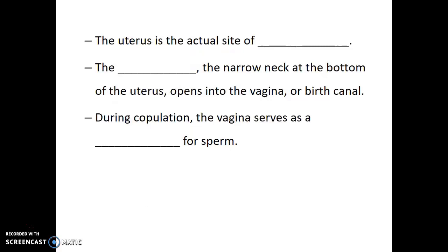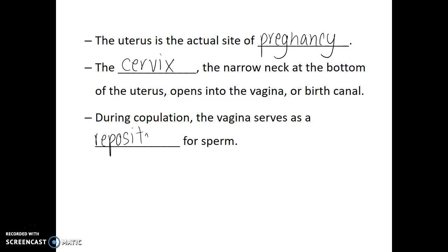The uterus is the actual site of pregnancy, as this is where implantation will occur. The cervix is the narrow neck at the bottom of the uterus and it opens into the vagina or birth canal. During copulation or sexual intercourse, the vagina serves as a repository for sperm. These are the anatomical structures of the female reproductive system.